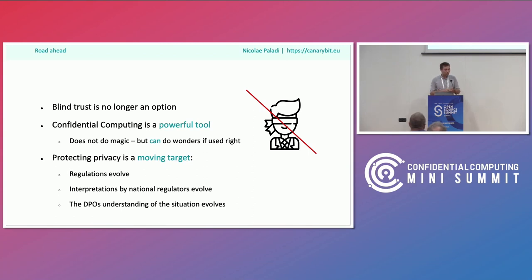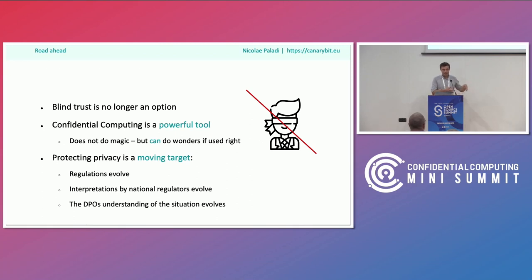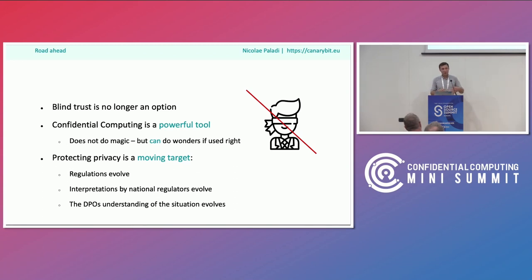Every nation state, even within Europe, will have its own interpretation of regulations, and even data protection officers within individual organizations may evolve their understanding over time. Whatever was fine today — 'we use confidential computing, so it's private' — tomorrow a DPO may read about new vulnerabilities and say it's not fine anymore, requiring more work. This is a moving target that makes the problem challenging and fun, and a good challenge for the confidential computing community to keep evolving rather than just resting on what we have.